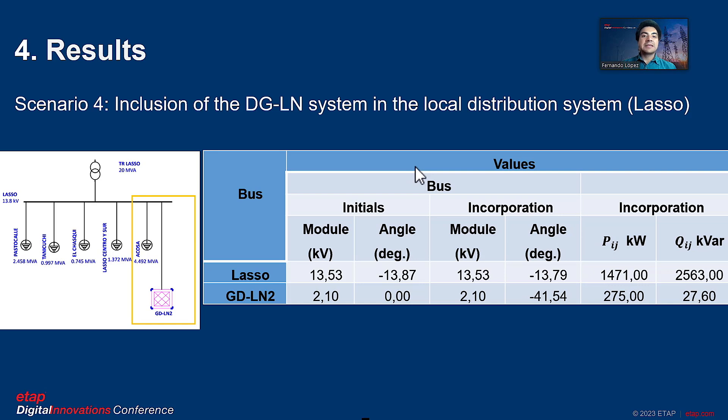In the same way, the inclusion of the distributed generation GDLN system is in the 13.8 kV bus corresponding to the Lasso substation, where a voltage variation of 0.001% and an angle variation of 0.58% is obtained.